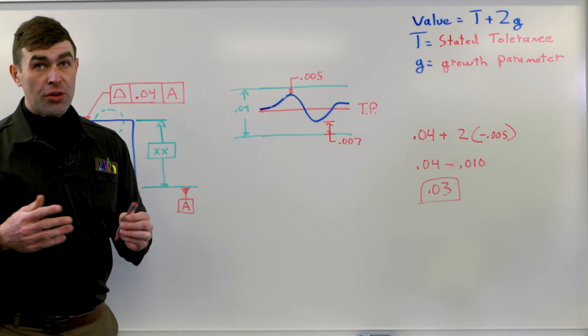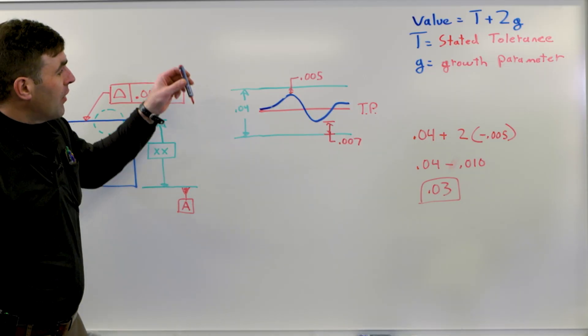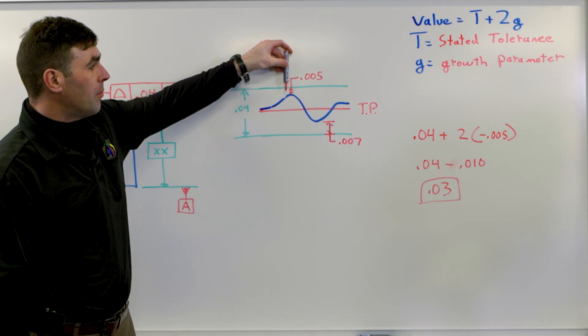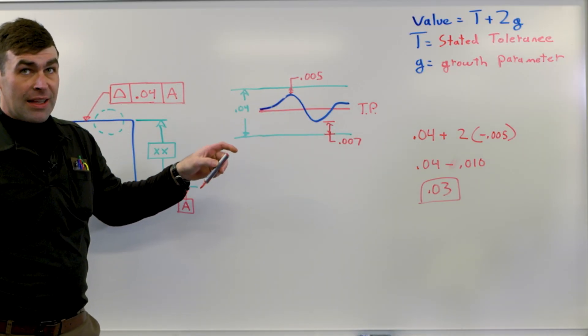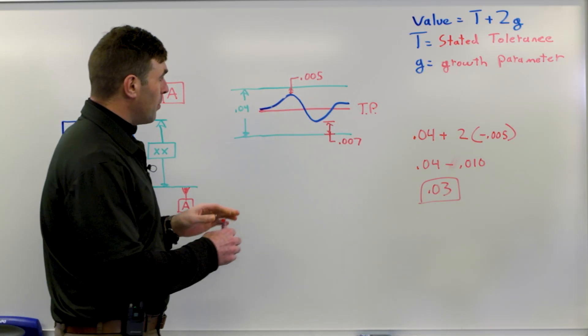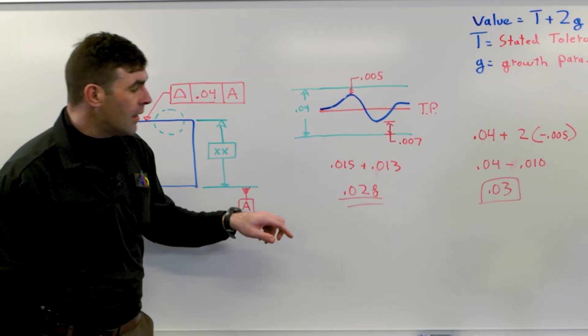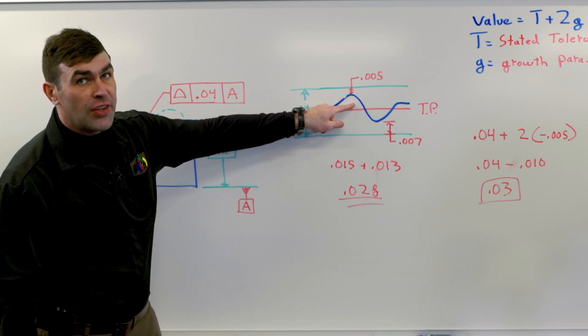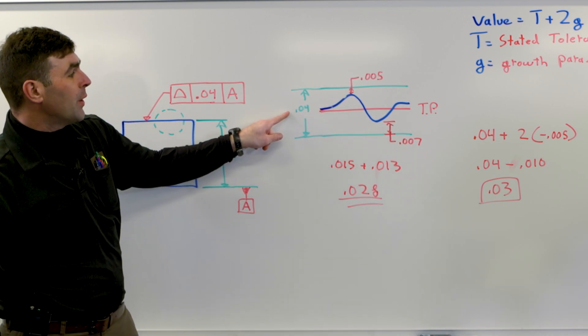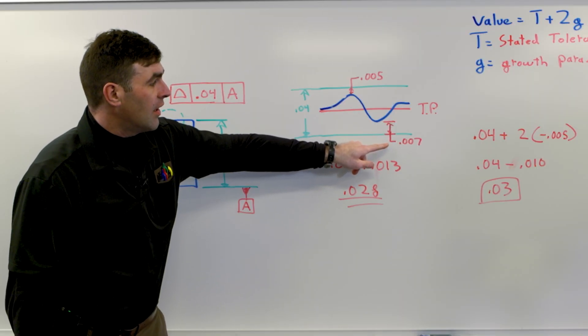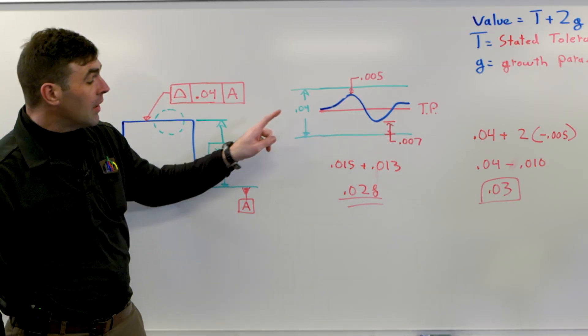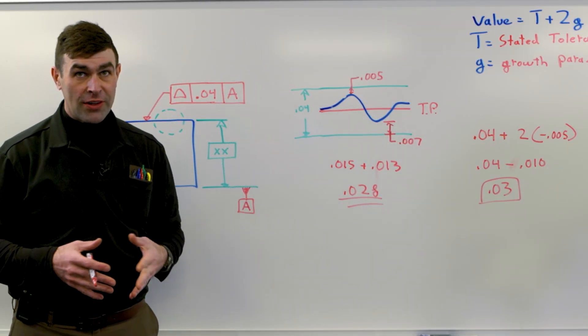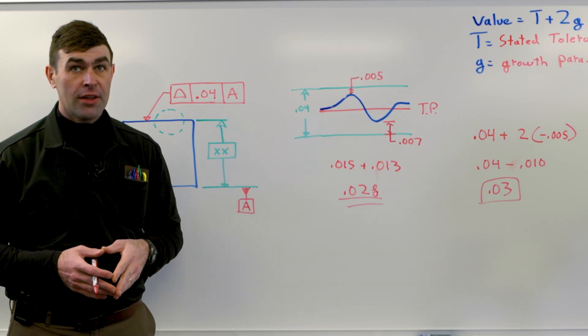Now, this is different than total indicator reading. If I zero an indicator right here on the true profile, indicator goes up, indicator goes down, I'm going to get a total indicator reading. That's going to end up being twenty-eight thousandths, right? Because this distance is fifteen, right? Five minus twenty. This distance is thirteen, seven minus twenty.